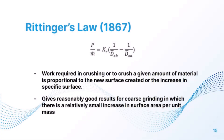Von Rittinger's Law, proposed in 1867, states that the work required in crushing a given amount of material is proportional to the new surface area created. It gives reasonably good results for fine grinding where there is a relatively small increase in surface area per unit mass. The equation is: P/ṁ = K_R × (1/D_SB − 1/D_SA), where K_R is Rittinger's constant.